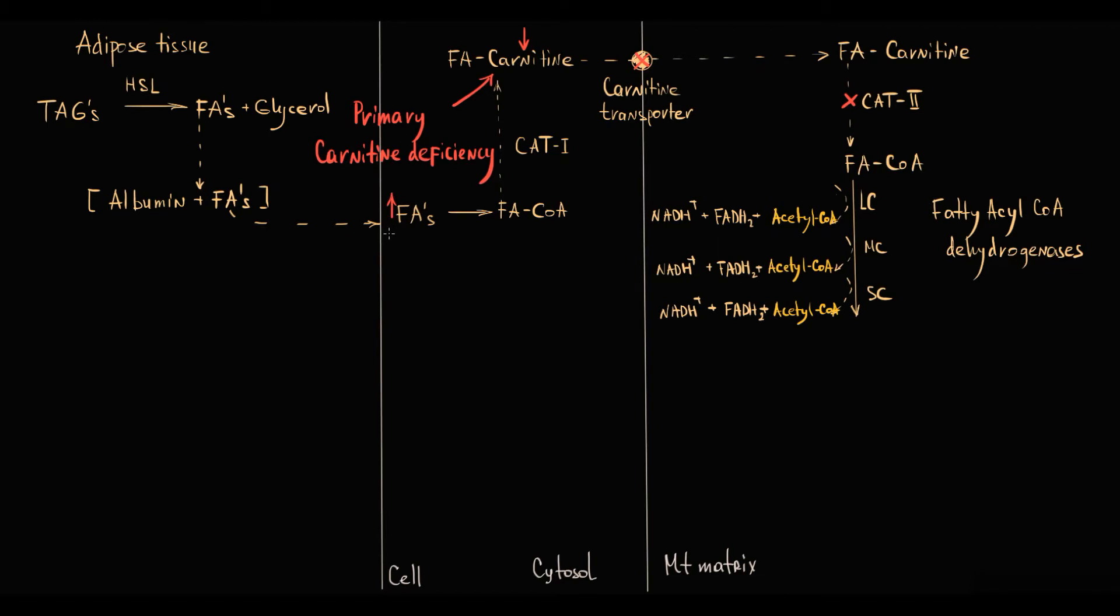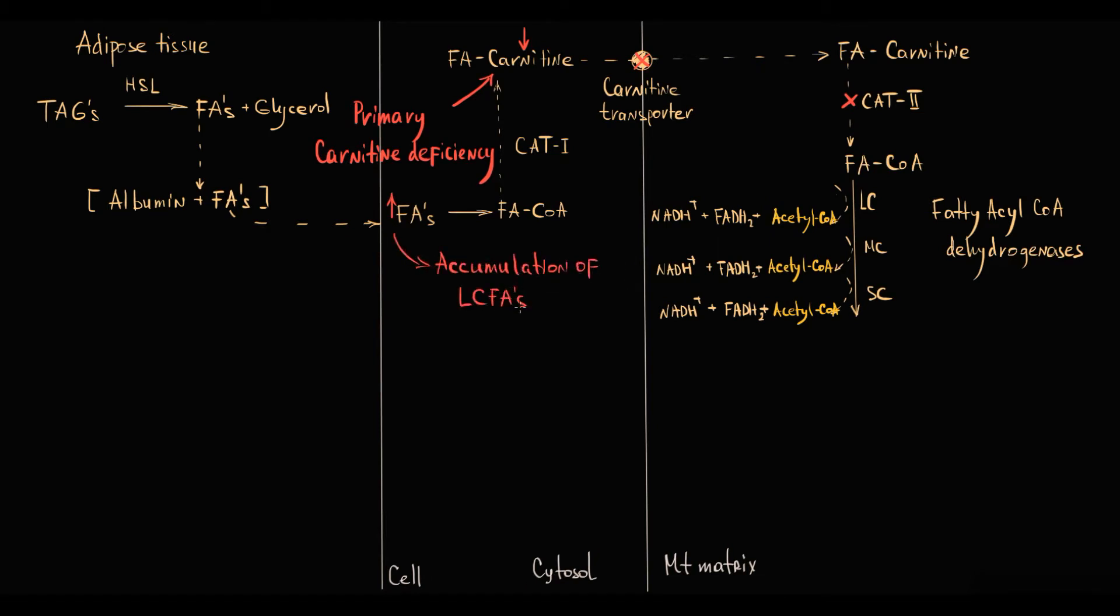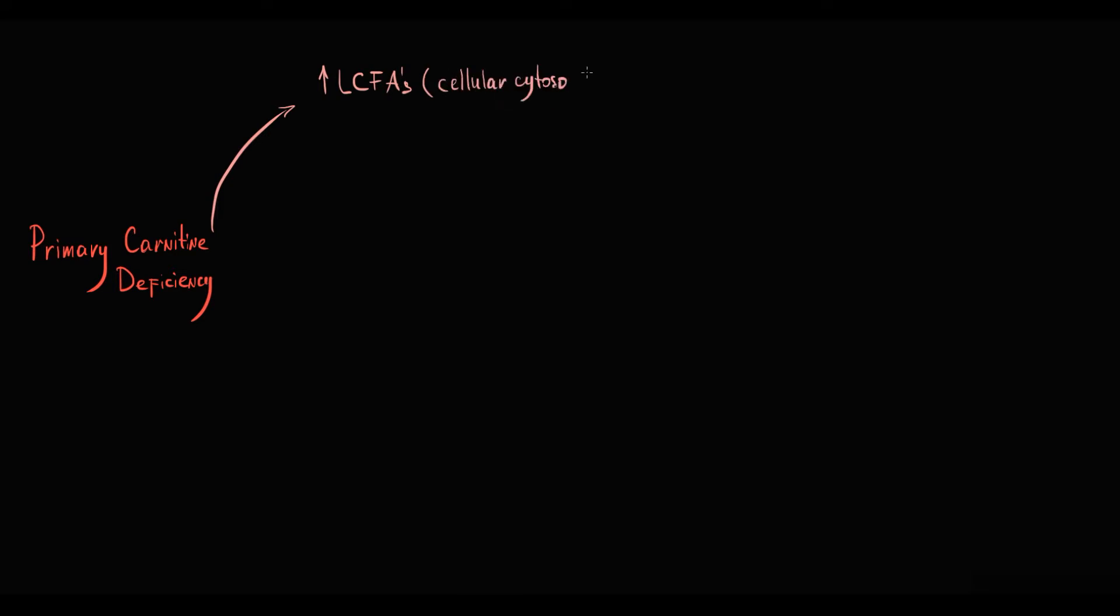Thereby, fatty acids accumulate in the cell or cytosol, and it is long-chain fatty acids because they are already uptaken by the cell, so they are intact. The first signature feature of primary carnitine deficiency is accumulation of long-chain fatty acids in the cell or cytosol.